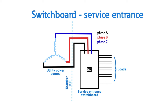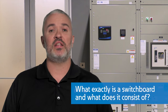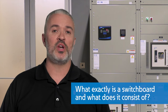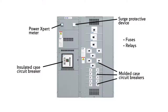If that's the case, the utility may have extra requirements for landing power directly to the board, and there will be requirements for grounding and bonding that will need to be considered. Switchboards integrate circuit breakers, fuses, metering, surge protection, and other electrical products to safely distribute and monitor power.